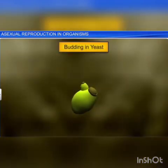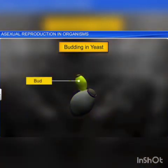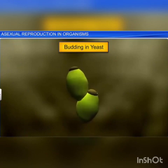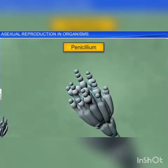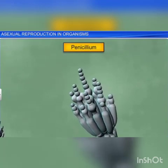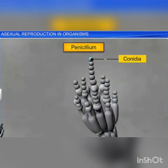Yeast, on the other hand, reproduces through budding, where the parent cell produces small buds through mitosis. These buds initially remain attached to the parent cell, and then separate to develop into new organisms. While yeast reproduces through budding, other members of the fungi kingdom, such as Penicillium, reproduce through conidia, a special asexual reproductive structure.